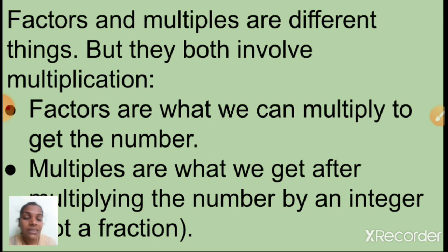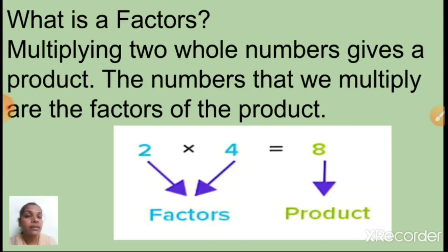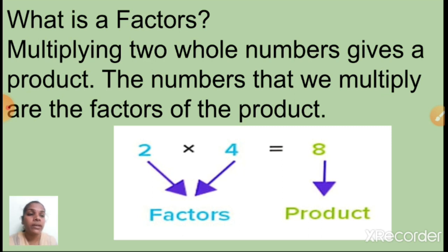Factors are what we can multiply to get the number. Multiples are what we get after multiplying the number by an integer. When I teach with examples, it will easily become clear. So, what is a factor? Multiplying two whole numbers gives a product. When we multiply two numbers, that answer is the product. The numbers that we multiply are the factors of the product.